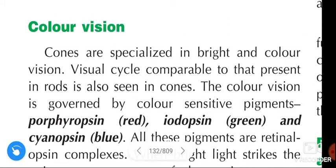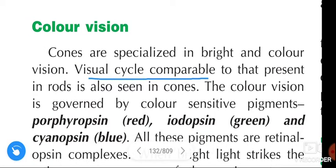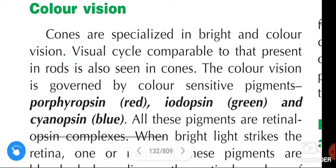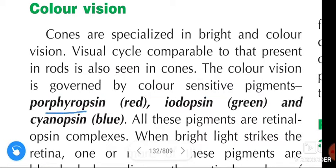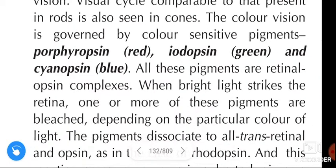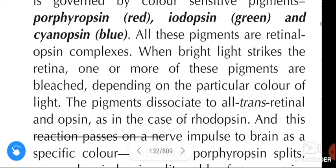Color vision: cones are specialized in bright and color vision. The visual cycle comparable to that present in rods is also seen in the cones. The color vision is governed by color-sensitive pigments — porphyropsin for red, iodopsin for green, and cyanopsin for blue. All these color-sensitive pigments are retinol-opsin complexes.